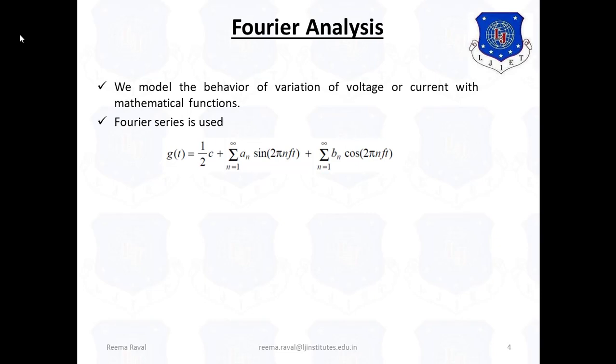Here, t is the time period, and the function can be reconstructed with An = 2/T integration in the interval 0 to T, G(t) sin(2πnft) dt, whereas Bn = 2/T integration in the interval 0 to T, G(t) cos(2πnft) dt. This is the Fourier Analysis part.